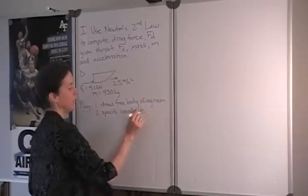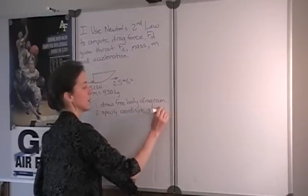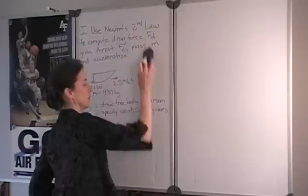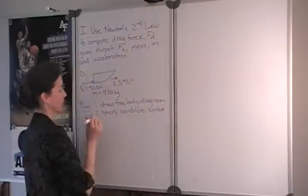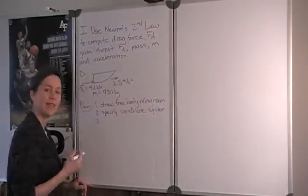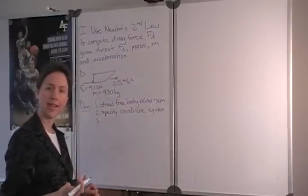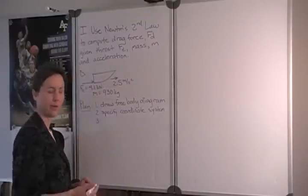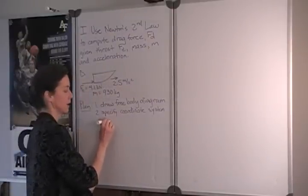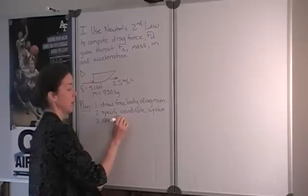And then we want to specify a coordinate system. That will prevent us from getting mixed up with our positives and negatives. And then we want to check the units of our given values to make sure that they're in MKS units. If they're not, we want to convert those.